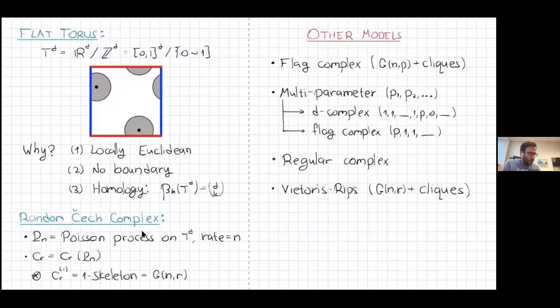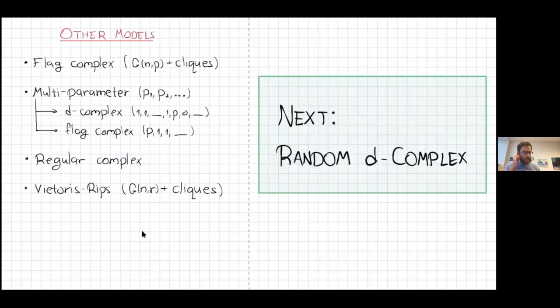These are the two models that have been most well studied in the theory of random simplicial complexes — one geometric, the other combinatorial. There are other models studied as well, including other generalizations of G(n,p) and random regular graphs, and new models are still coming up since this field is relatively young. Tomorrow's talk will dedicate time to the random D-complex — the generalization of the Erdős–Rényi graph — reviewing results known about its homology and how they connect to what is known about the Erdős–Rényi graph.